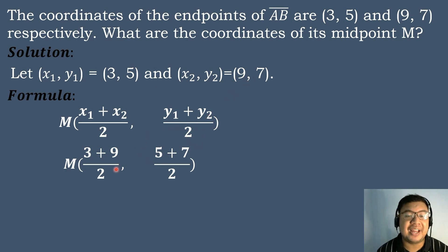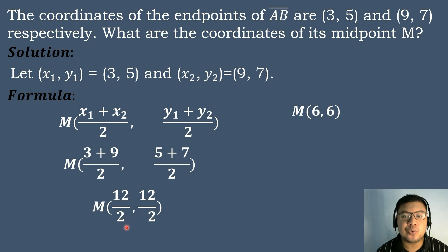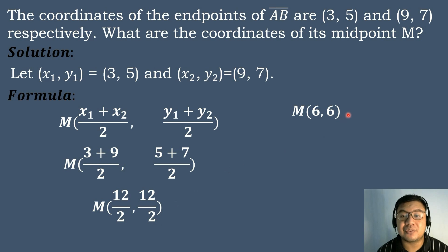And then we will simplify. So 3 plus 9 will be equal to 12 over 2. And then 5 plus 7 is equal to 12 over 2. And then 12 divided by 2 is equal to 6. And then 12 divided by 2 again is equal to 6. Therefore, the coordinates of the midpoint of segment AB is the ordered pair (6, 6).